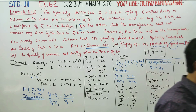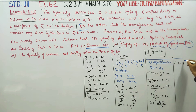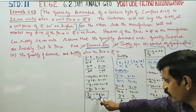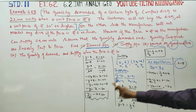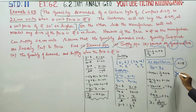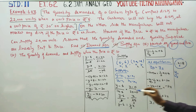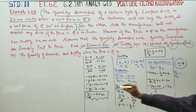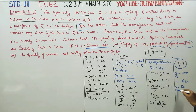So x = 18, meaning 18,000 CDs. To find the equilibrium price, substitute x = 18 into the demand equation: y = -18 + 30 = 12. The equilibrium price is y = Rs.12.